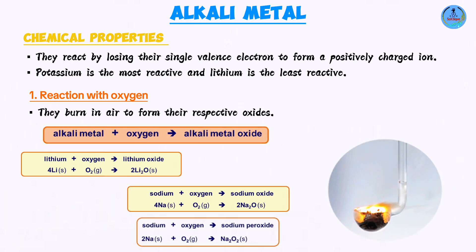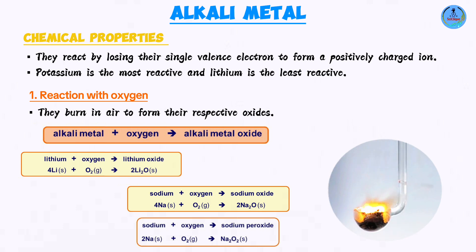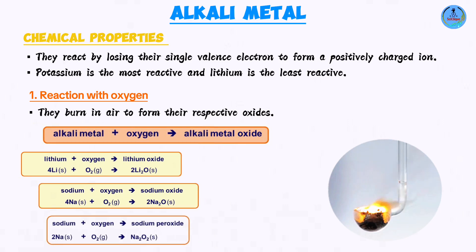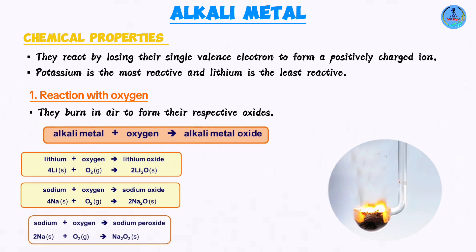When it comes to sodium, it can form two different oxides depending on the concentration of oxygen. When sodium burns in a limited supply of air it forms a white solid called sodium oxide (Na₂O). But when sodium burns in air rich in oxygen, it forms sodium peroxide (Na₂O₂).